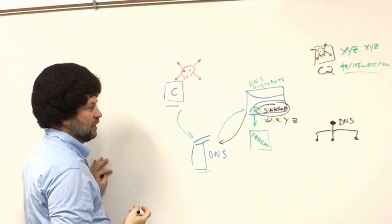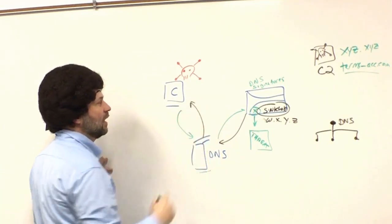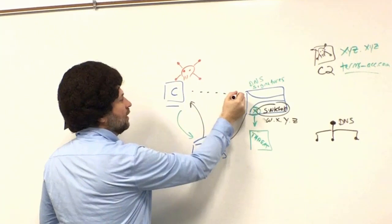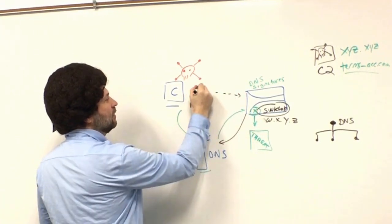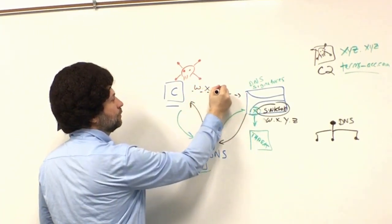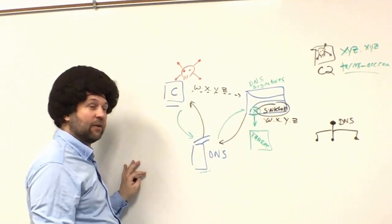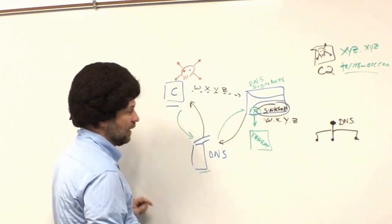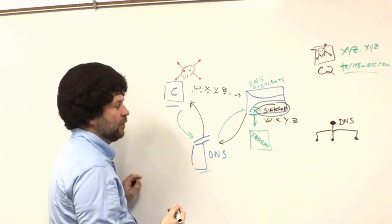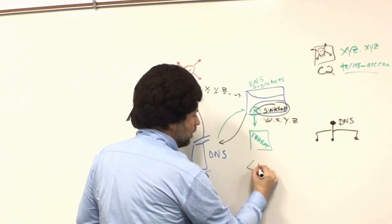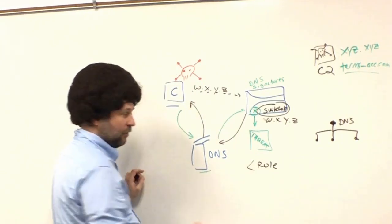The DNS server takes this, sees it as a response from its DNS query, and it's going to pass that IP address on to the client. The client then is going to attempt to connect to that IP address. When it attempts to connect to that IP address, this is the important thing.